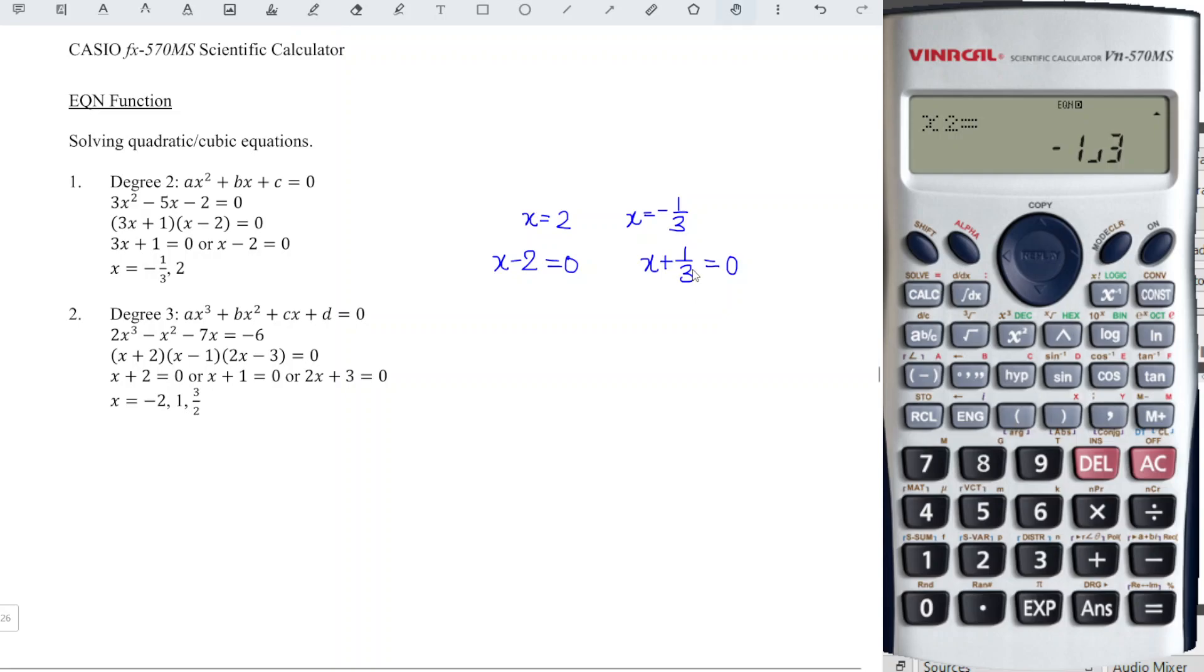And we shouldn't have any fraction, so we times the whole equation by 3. So which means that we should have 3x plus 1 equals 0. And this is the factor that we're looking for. So we should have x minus 2 and 3x plus 1 equals 0. So we can move backward and obtain the steps by using the calculator.